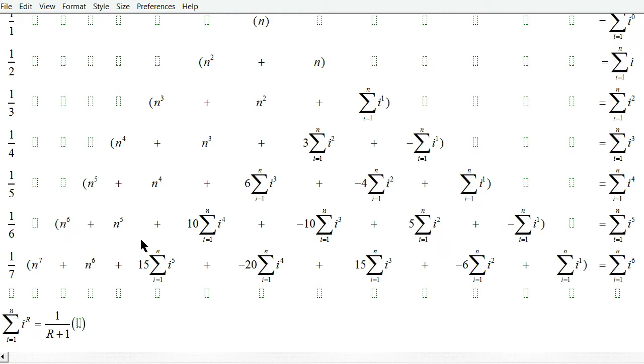So in general, for any row where r is greater than 0, well for example here we have sum of i to the first power, r is 1 in this case, so we have n to the 1.